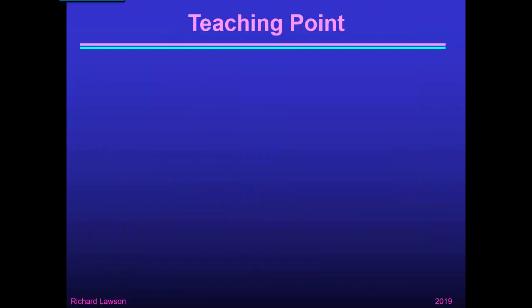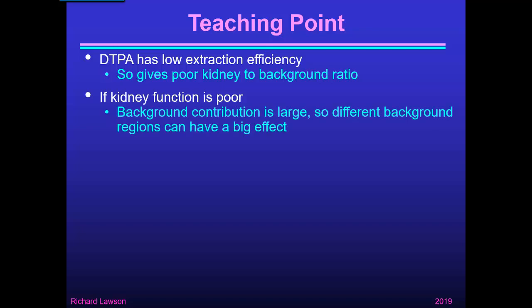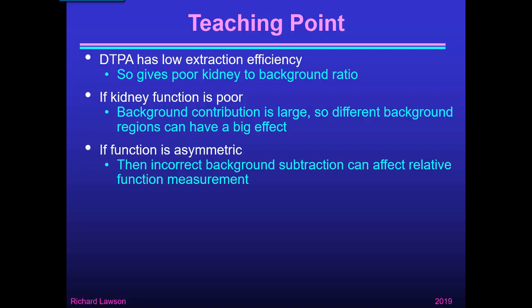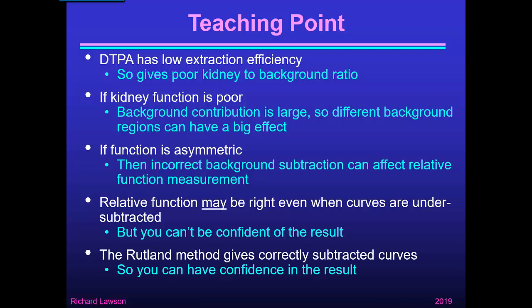The teaching point from this patient is that because DTPA has low extraction efficiency, it gives a poor kidney-to-background ratio. In this case, where kidney function was poor, the background contribution was large, so different background regions can have a big effect — particularly with asymmetric function, where incorrect background subtraction significantly affected the relative function measurement. The Rutland method gives correctly subtracted curves and so gives us confidence in the result.